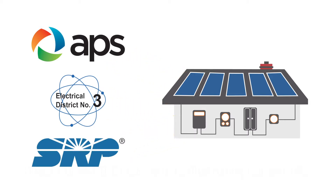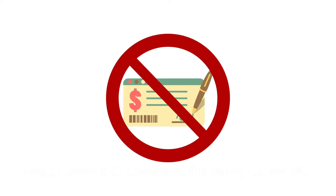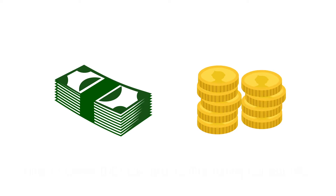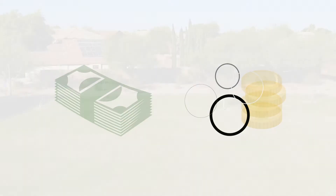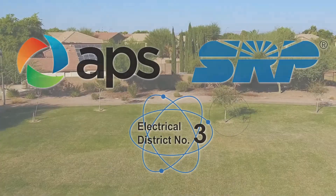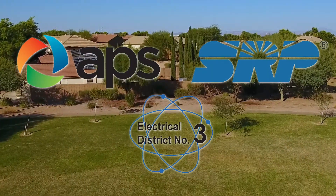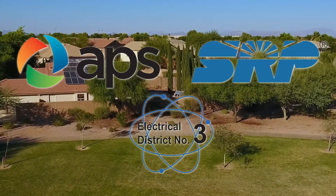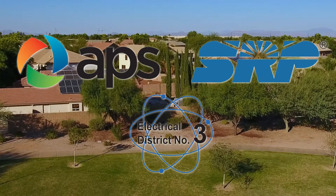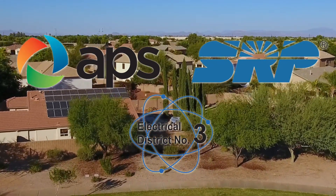In most cases, energy companies will pay credits back for any energy that is produced. Instead of cutting you a check, they typically say: for every dollar's worth of electricity you give me, I'll give you 90 cents back — some say 40 cents back. It really depends on what those local energy companies are willing to pay for the extra electricity being produced and given back to them.